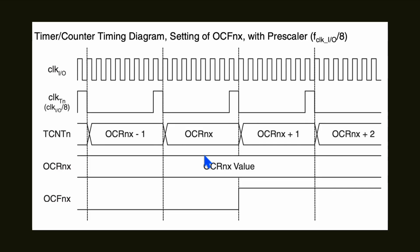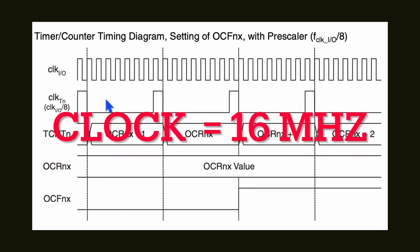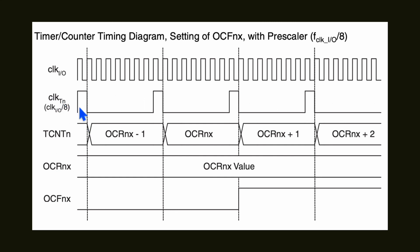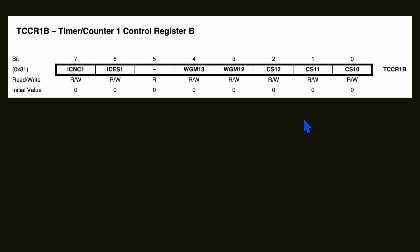Next we have to decide the clock frequency. This microcontroller on the development board runs at 16 MHz. There is a pre-scaler feature that allows you to reduce the clock frequency for Timer 1. For example, dividing by 8 gives 2 MHz. The pre-scaler is configured via the timer control register, which decides the clock frequency for Timer 1.